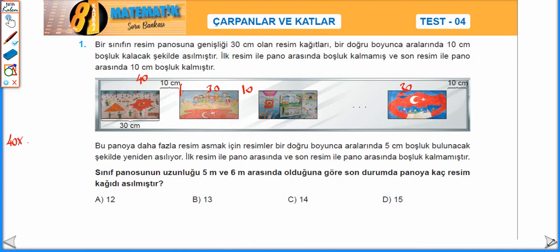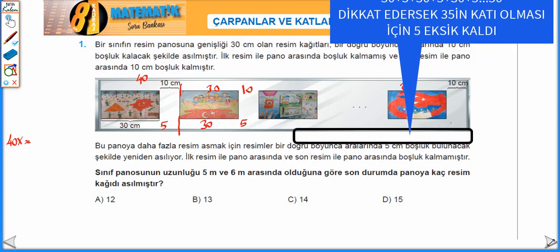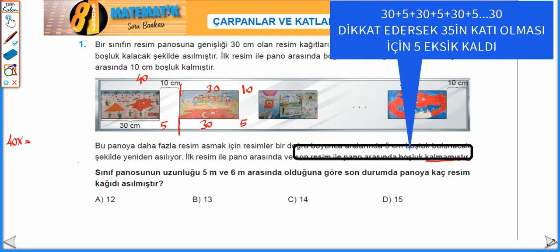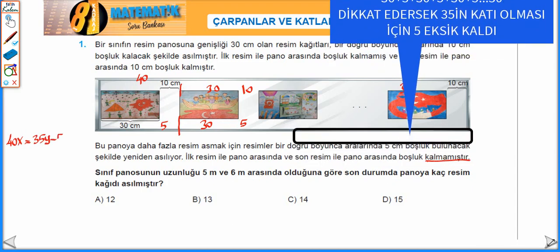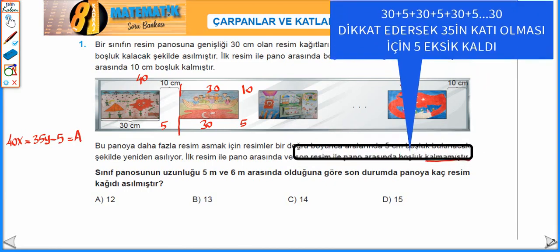40x panonun uzunluğu diyelim. İkinci durumda 30 cm resim 5 cm boşluk olarak devam ettiğinde 35'in bir katı olduğunu görüyoruz, ama en son durumda boşluk kalmamıştır dediği için 5 çıkaracağız. 35'in bir katı ama 5 eksiği eşittir a.